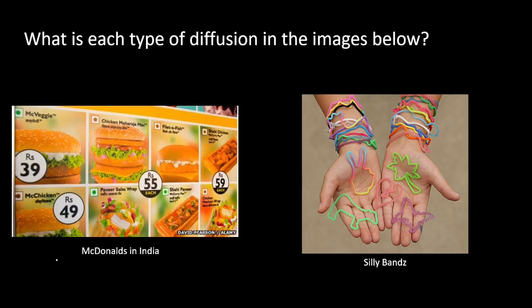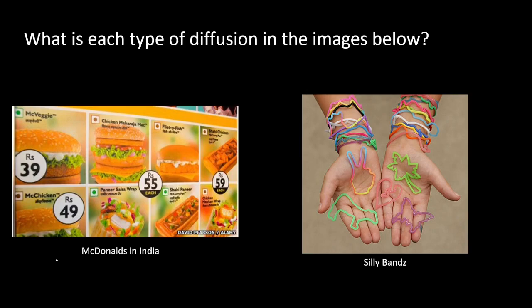Now let's classify two examples. First, McDonald's in India: the menu has McVeggie and fish items, but beef is missing. People in India don't eat beef primarily because cows are sacred in the Hindu religion. McDonald's changed the menu — they took out all beef items and replaced them with chicken and veggie options. That's Stimulus Diffusion. Second, Silly Bands: they just spread rapidly out of nowhere through everyone, not from a small town or from commoners specifically. That's Contagious Diffusion.